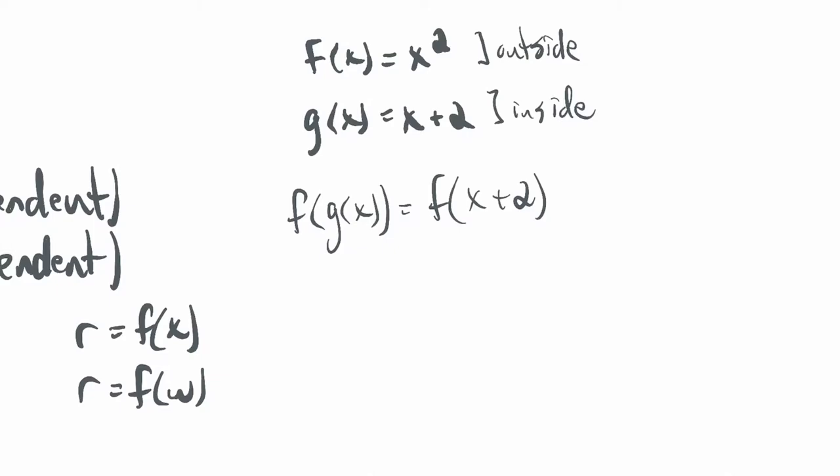So f of g of x equals x plus 2 squared, and if you foil that out you get x squared plus 4x plus 4. If you reverse that and switch the labels, you could ask what is g of f of x.